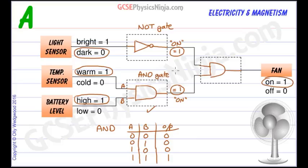For any other combination this will give us a logic 0 and the fan will be off. So this logic circuit will do the job of turning the fan on when it's dark and when it's warm and the battery is high.